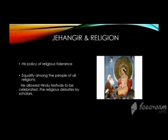Jahangir and religion: in this regard, he followed his father's policy — the religious policy of tolerance. If you remember, we have discussed four different pillars of his religious policy: equity, amity, tolerance, and forgiveness. He followed those as well. Along with that, he was quite broad-minded. He represented equality among all people of all religions. He allowed the Hindus to celebrate all their festivals and also invited scholars belonging to different religions to have debates.